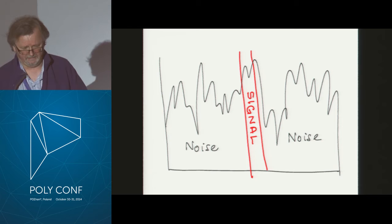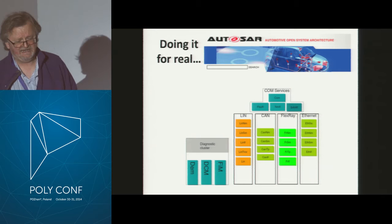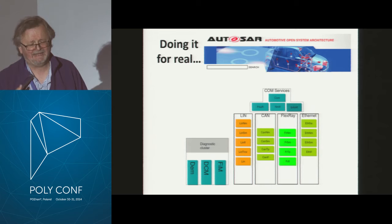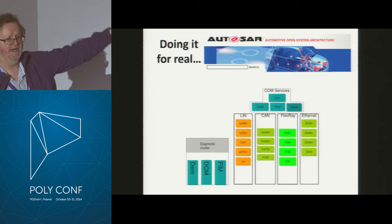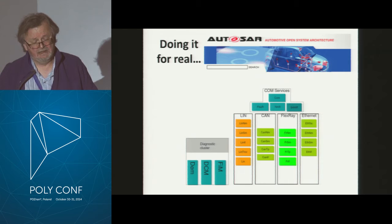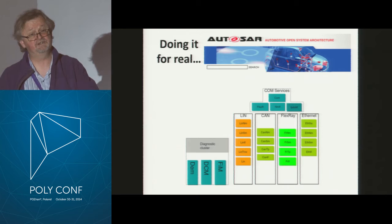I've demonstrated QuickCheck on a very tiny toy example. You might wonder: does it work for real? Well, for the past few years we've been doing work for Volvo Cars, testing part of the Autosar basic software — software that runs on the processors in cars. A car nowadays will have 50 to 100 processors, and all of them run the basic software. It's not the application that controls the engine or opens windows; it's stuff like an Ethernet stack, the CAN bus stack, and other basic software. Every processor is supposed to run it.